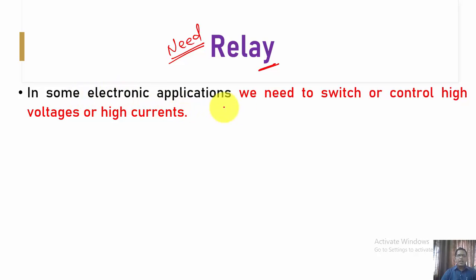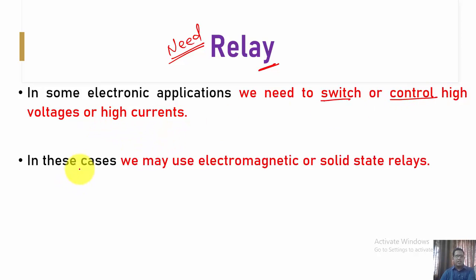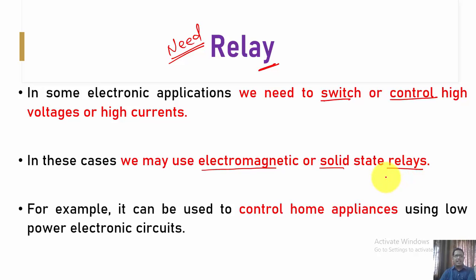Basically, in some electronic applications we need to switch or control high voltages or high currents. In these cases, we may use an electromagnetic or solid-state relay. For example, it can be used to control home appliances using a low-power electronic circuit.